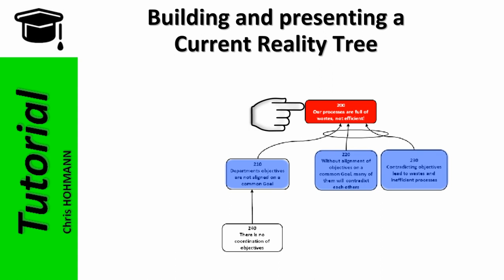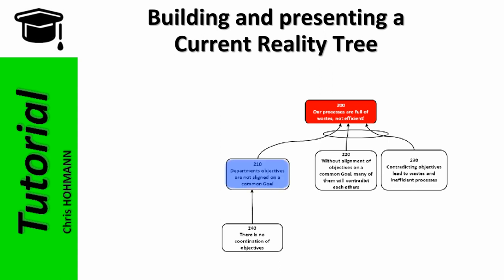Entity 220 and 230 were added to strengthen the logic - this is general knowledge about management and systems dynamics, not specific to the company. Going back to number 210 and asking why departments' objectives are not aligned on a common goal, the answer is there is no coordination of objectives, which becomes entity 240.